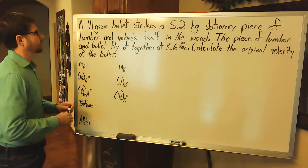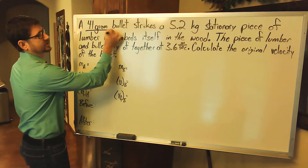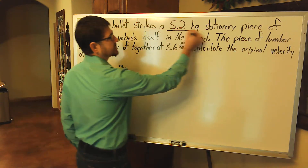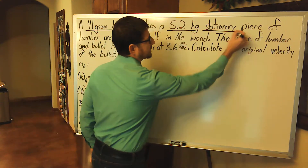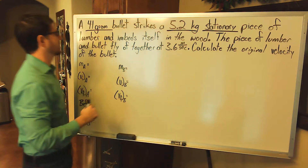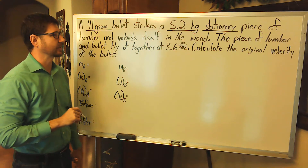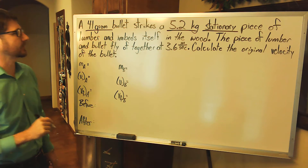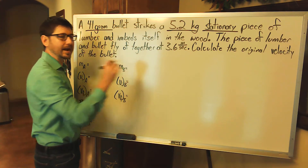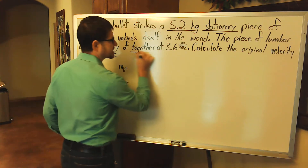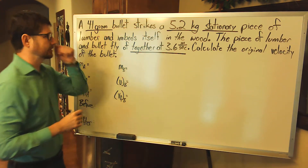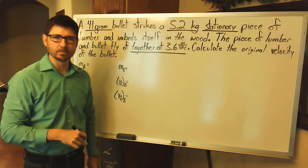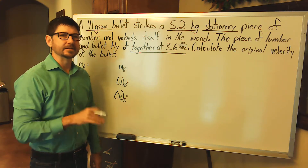A 41 gram bullet strikes a 5.2 kilogram stationary piece of lumber and embeds itself in the wood. The piece of lumber and bullet fly off together at 3.6 meters per second. Calculate the original velocity of the bullet.